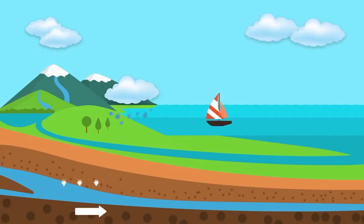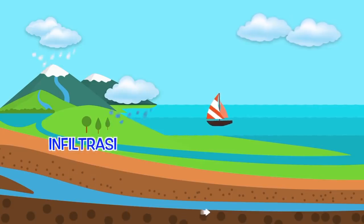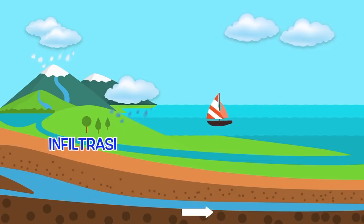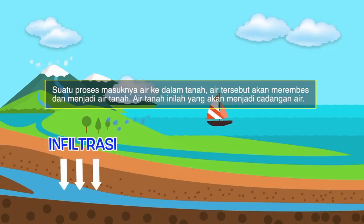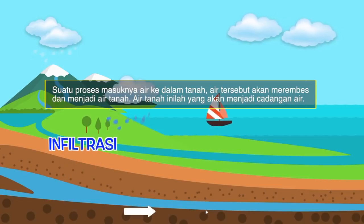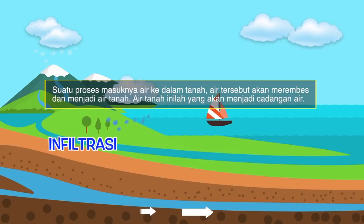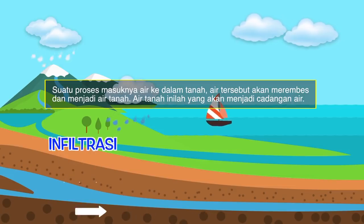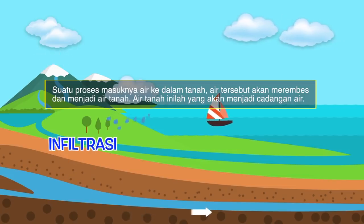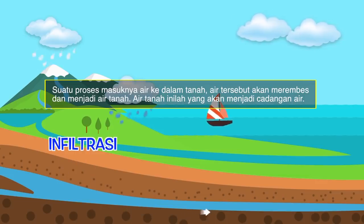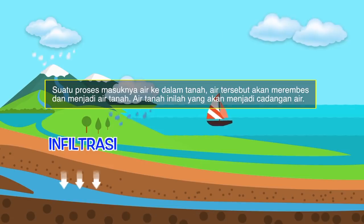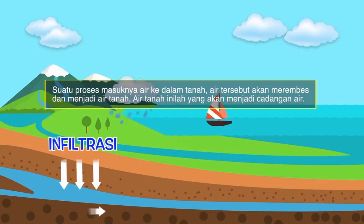Sobat X-Science, proses siklus air yang terakhir adalah infiltrasi. Infiltrasi ini berbeda ya dengan limpasan. Infiltrasi merupakan proses masuknya air ke dalam tanah. Setelah hujan, tidak semua air akan mengalir seperti tahapan limpasan. Beberapa di antara mereka akan bergerak jauh ke dalam tanah. Air tersebut akan merembes dan menjadi air tanah. Air tanah inilah yang nantinya menjadi cadangan air kita.